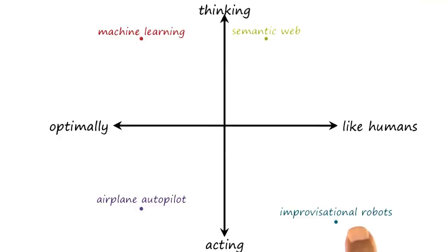Improvisational robots that can perhaps dance to the music that you play—they're acting, and they're behaving like humans, dancing to some music.